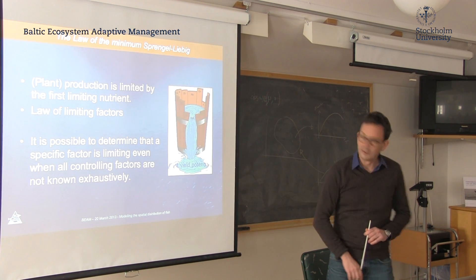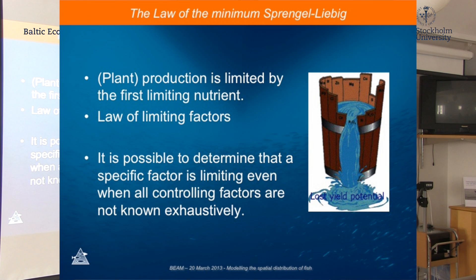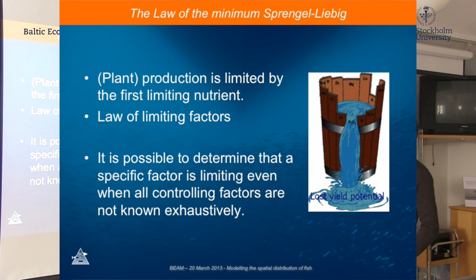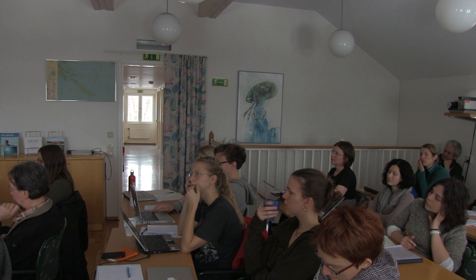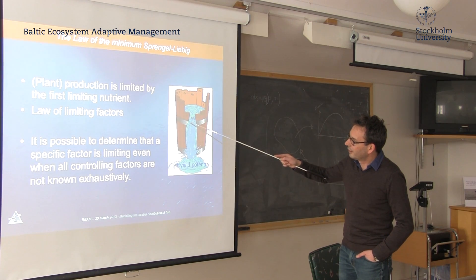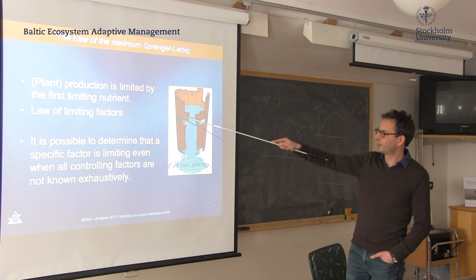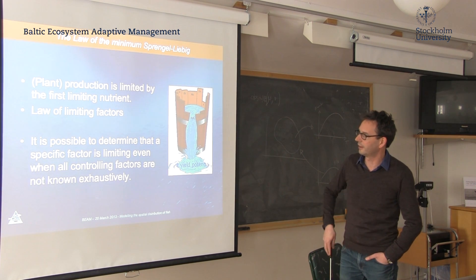You've heard about Liebig yesterday and the Liebig law of the minimum — plant production is limited by the first limiting nutrient, also called the law of limiting factors. If you Google it, you find the barrel analogy, where each plank on the barrel is a nutrient, and the lowest one limits the whole production, symbolized by the maximum water level in the barrel.